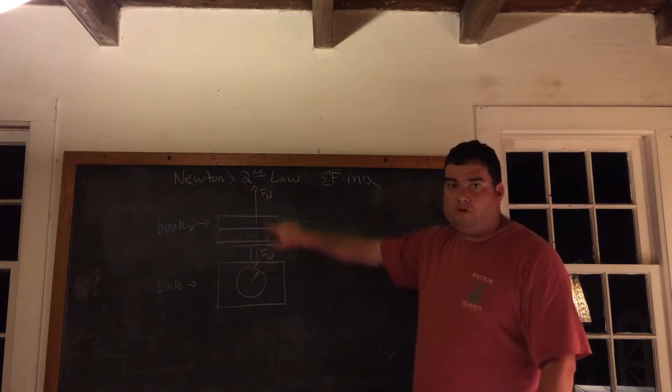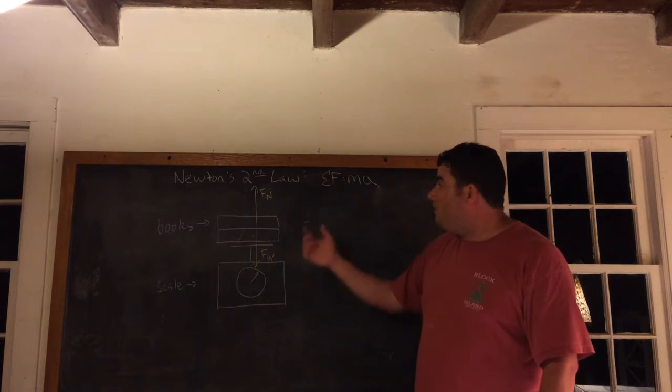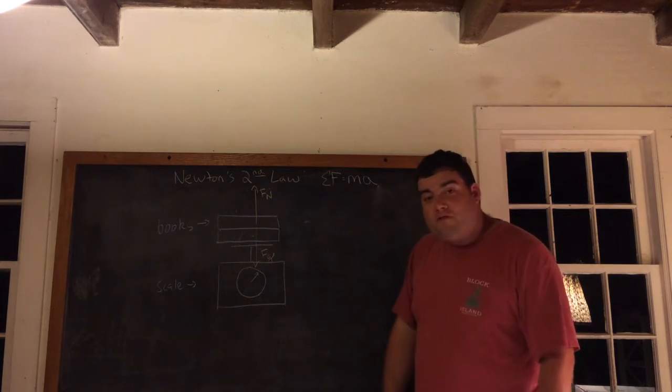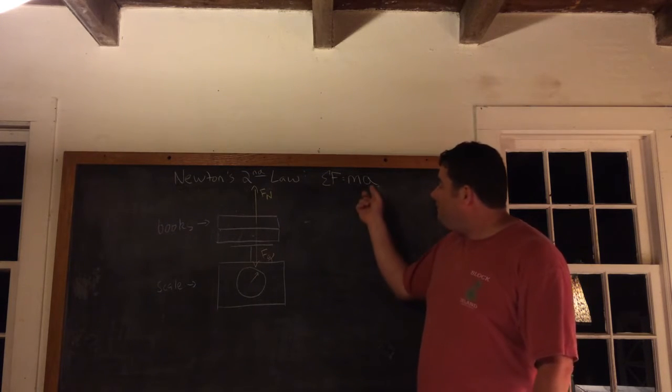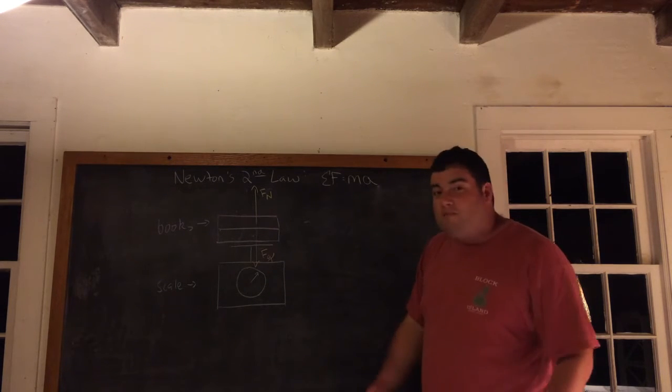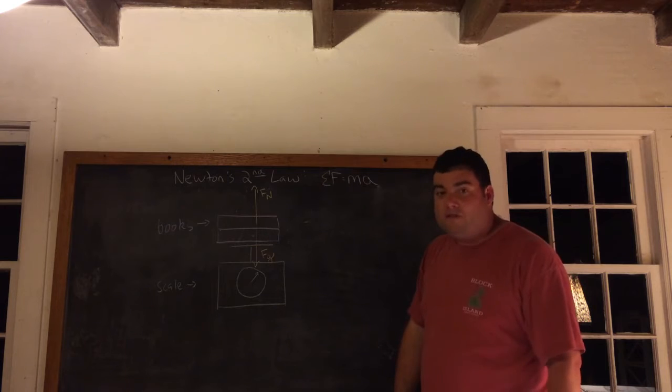And this normal force must be what's causing sigma f to be different. How do we know sigma f is going to be different? Well, because sigma f has something to do with acceleration, and I think it's pretty clear that that elevator was definitely accelerating.